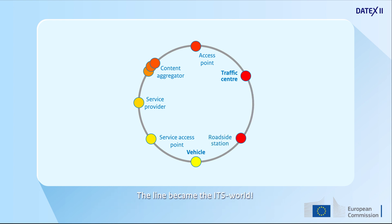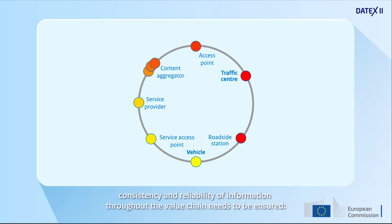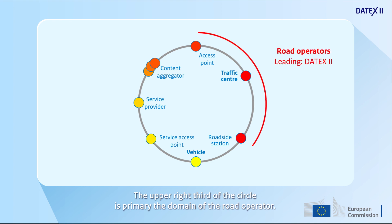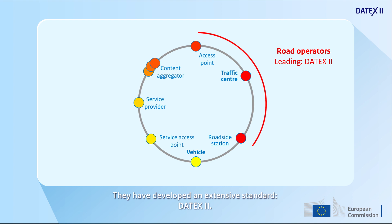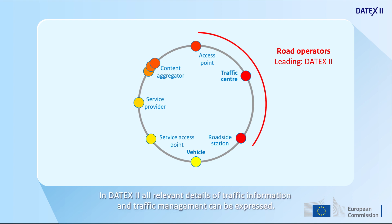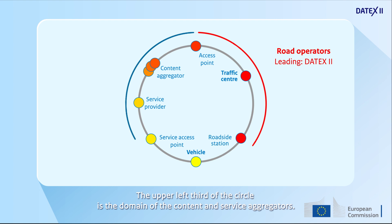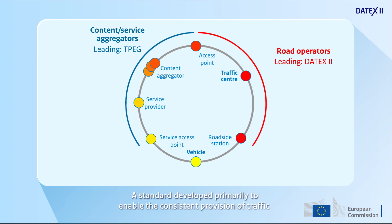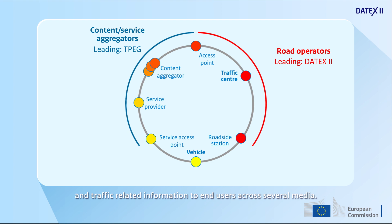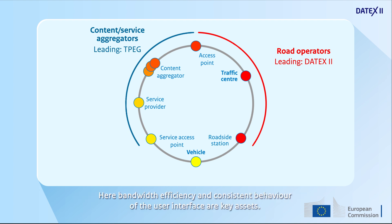The line became the ITS world. However, the circle also brings a big challenge: consistency and reliability of information throughout the value chain needs to be ensured. The upper right third of the circle is primarily the domain of the road operator. They have developed an extensive standard, DATEX2. In DATEX2, all relevant details of traffic information and traffic management can be expressed, with the focus on providing an as complete information view of the road as feasible. The upper left third of the circle is the domain of the content and service aggregators. The leading standard is TPEG, developed primarily to enable the consistent provision of traffic and traffic-related information to end users across several media. Here, bandwidth efficiency and consistent behaviour of the user interface are key assets.